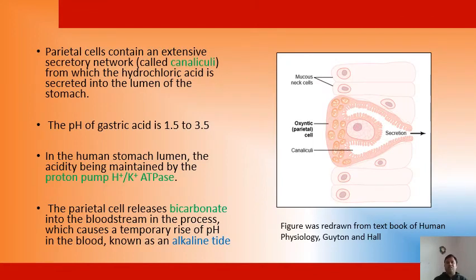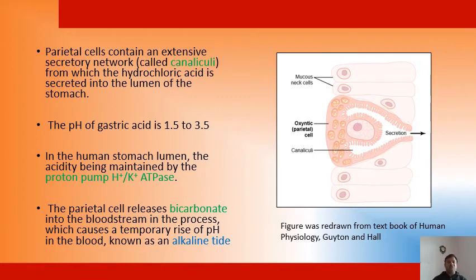In this figure I have shown the parietal cell, or oxyntic cell, which secretes hydrochloric acid. The energy required is large, so a large number of mitochondria are present in the parietal cells. The acid secreted by the oxyntic cells comes into the canaliculi. The mucous cells are also present. The pH of gastric acid is 1.5 to 3.5, being highly acidic. In the human stomach lumen, acidity is maintained by the proton pump, or hydrogen-potassium ATPase. The parietal cells release bicarbonate into the bloodstream, causing a temporary rise in blood pH, also known as the alkaline tide.